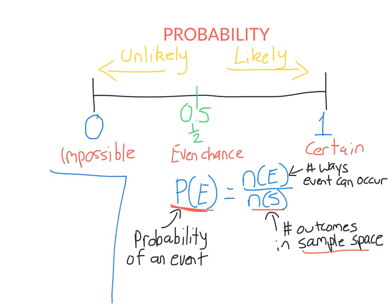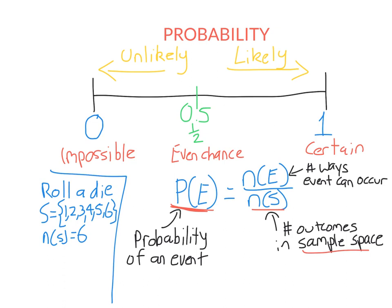Let's look at an example. Say I roll a normal six-sided die. The sample space S is the list of all possible outcomes: 1, 2, 3, 4, 5, 6. So NS, the number of outcomes in the sample space, is 6. Using this formula, if I write P(1), that means the probability that I get a 1. There's only one 1 on the die and six outcomes in total, so it's just 1 over 6.